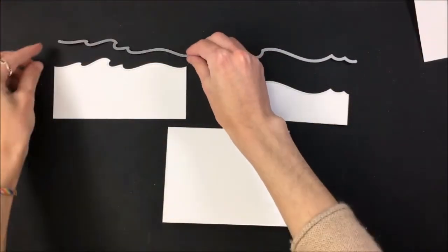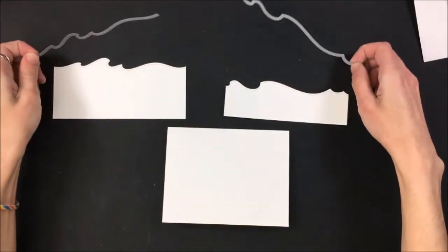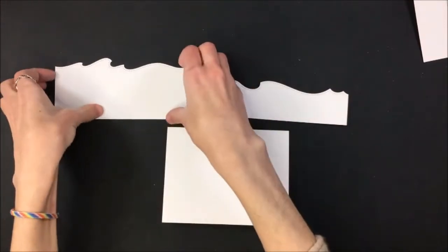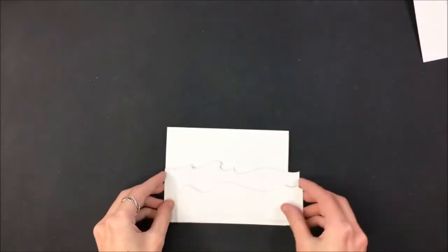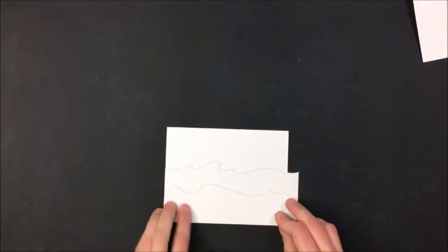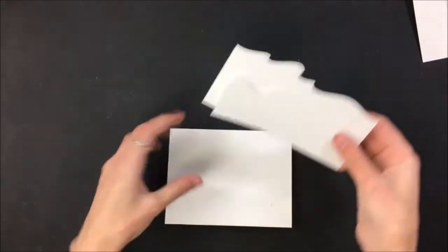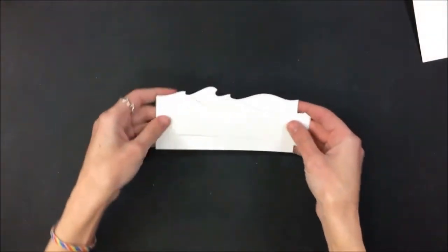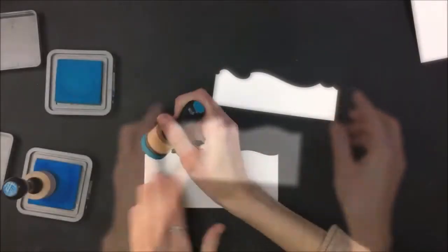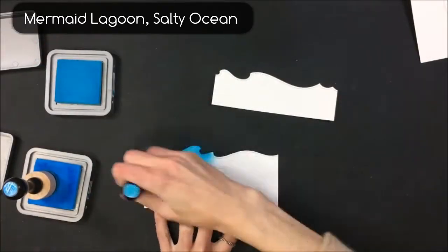So off screen I have done some die cutting using the Lawn Fawn Stitched Border Waves and I've just cut those from 110 pound cardstock. One goes about halfway up the card base and the other one goes halfway up that, and these we are going to ink blend in a second. This is all going to be for a four and a quarter by five and a half inch card, which is going to be horizontal.